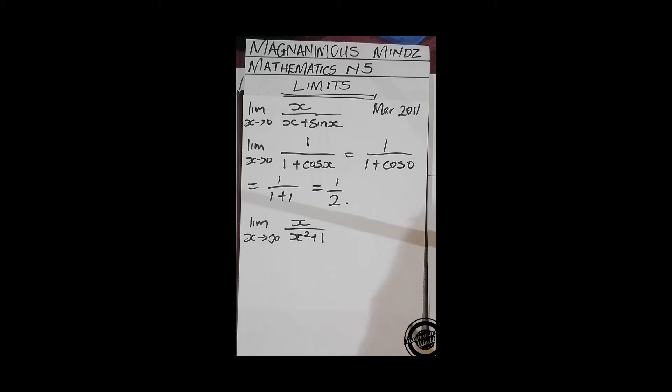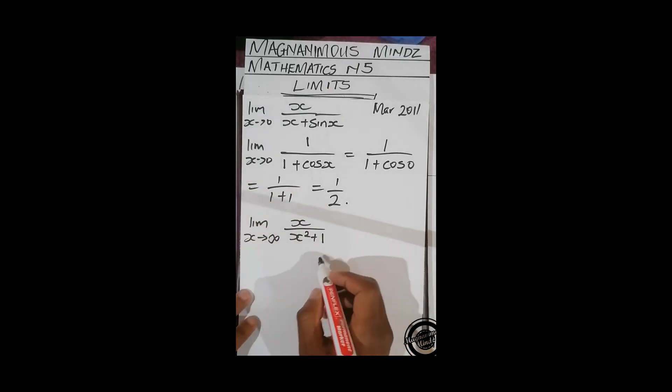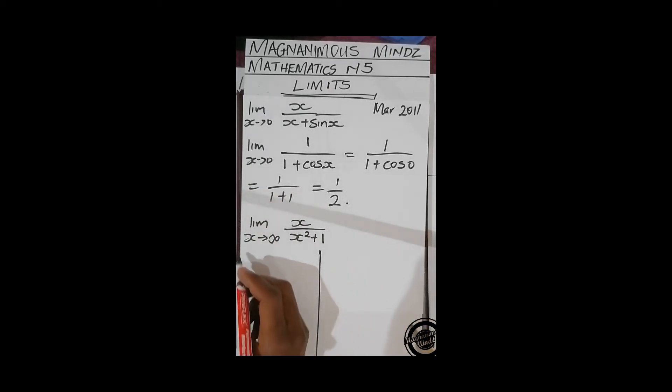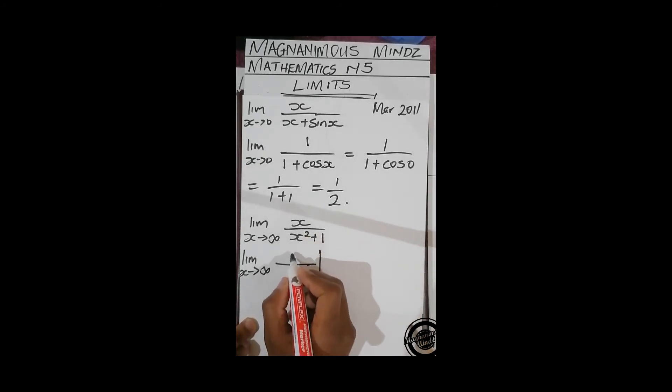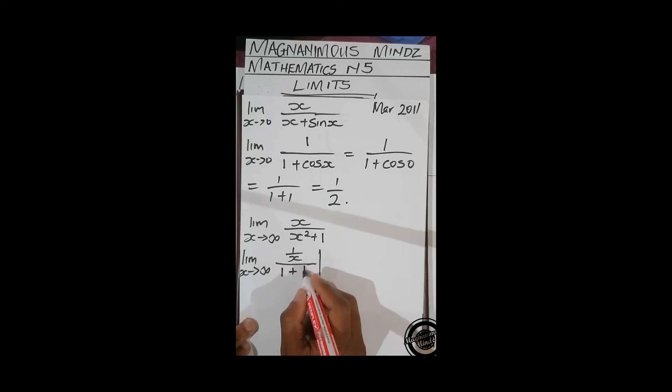So we can choose to use L'Hôpital or to simplify. If we simplify, I'm going to say lim x approaching infinity and we divide by x to the power n where n is the highest degree. So we're going to divide by x². It's going to be x over x² which is 1 over x, then x² divided by x² is 1 plus 1 over x².